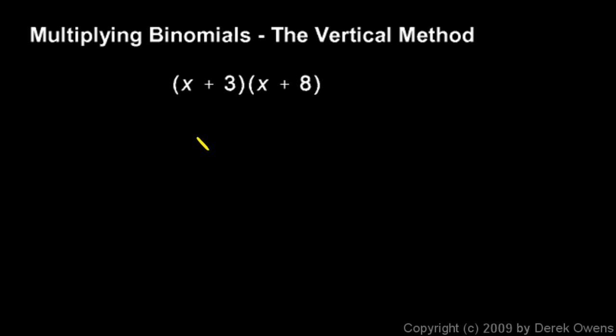I'm going to rewrite this problem. I'll write x plus 3 and x plus 8, and then I draw a line and I'm going to be multiplying x plus 3 times x plus 8. The procedure here is remarkably similar to the procedure for multiplying numbers where the digits are lined up in columns like this.